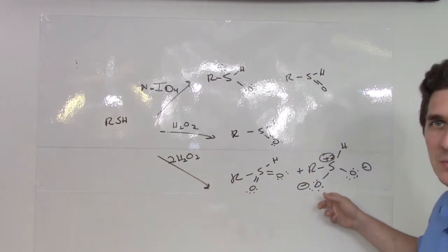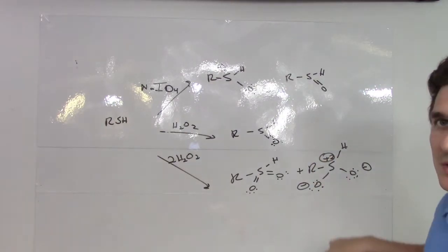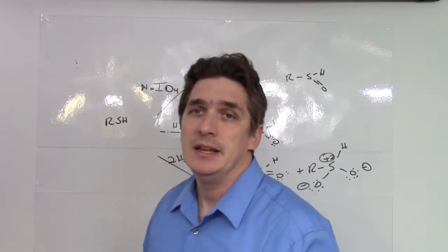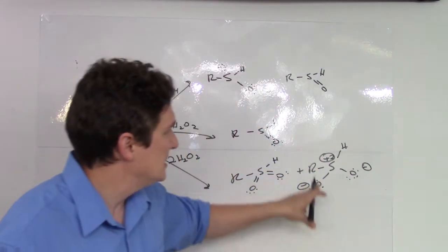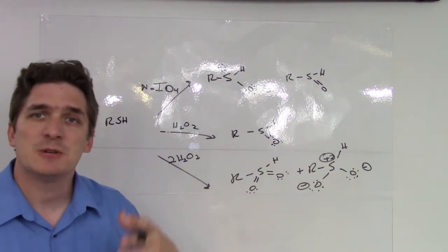The reason they're writing it with the plus two charge on the sulfur and the negative one on the oxygens is to kind of satisfy the octet rule. Personally, I prefer the one where you minimize the formal charges, but it doesn't matter.